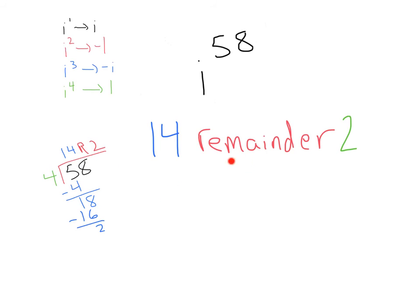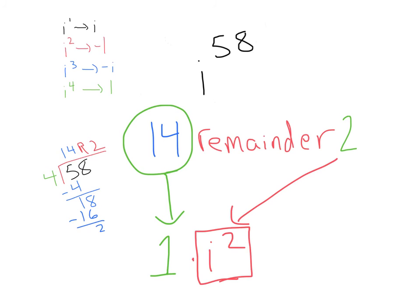What this 14 remainder of 2 tells me is that I'm going to go through my cycle of 4, 14 times, leaving me with 1. So this 14 times leaves me with 1, and then my remainder of 2 is leaving me with an i squared. This i squared is what's important, because we're just going to have 1 times i squared, which is going to leave us with i squared. Which, going back to our pattern, we can see i squared and what we know is negative 1. So this i to the 58 can simplify to negative 1.